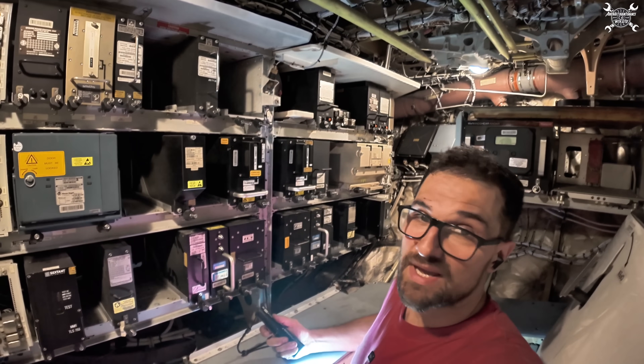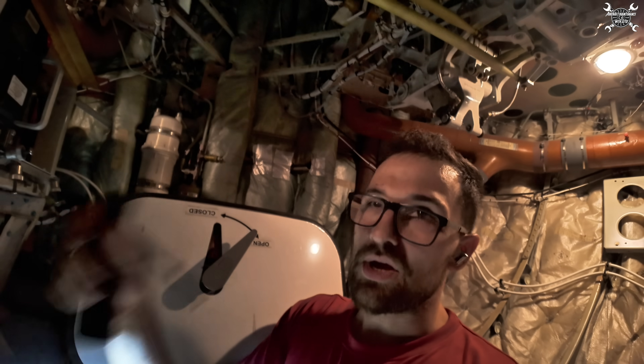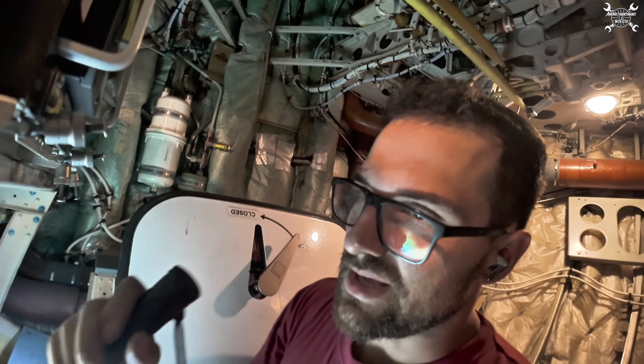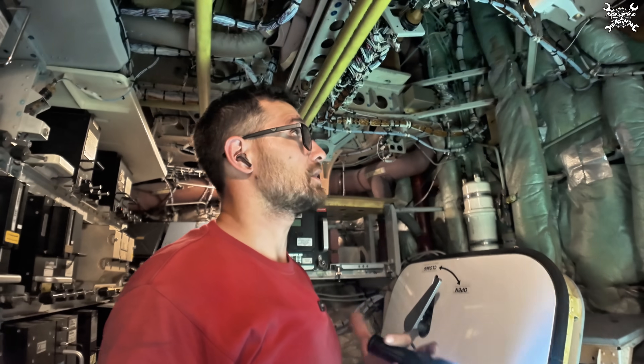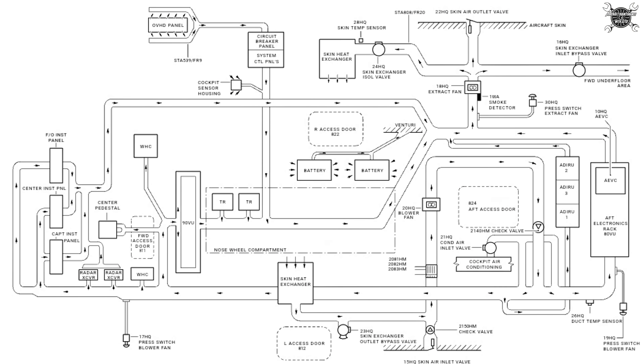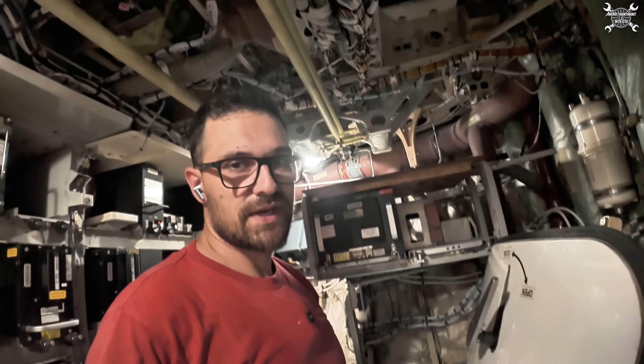Now in the forward avionic bay, where another set of computers responsible for controlling airplane systems is located. The ducts run all around here because this system is responsible for cooling of cockpit equipment as well — leading toward the pedestal and basically everywhere in the cockpit. Background lights and everything in the cockpit produce heat, and the avionic ventilation system controls all of it.